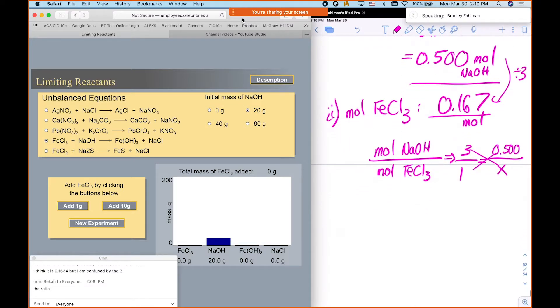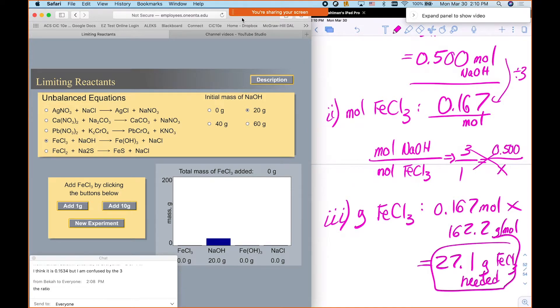And so then the third step is to calculate grams of iron chloride. And so we would do 0.167 times its molar mass. Okay. And so that would be 55.85 and then 35.45 times three is 162.2. So that's 27.1 grams of iron chloride needed.